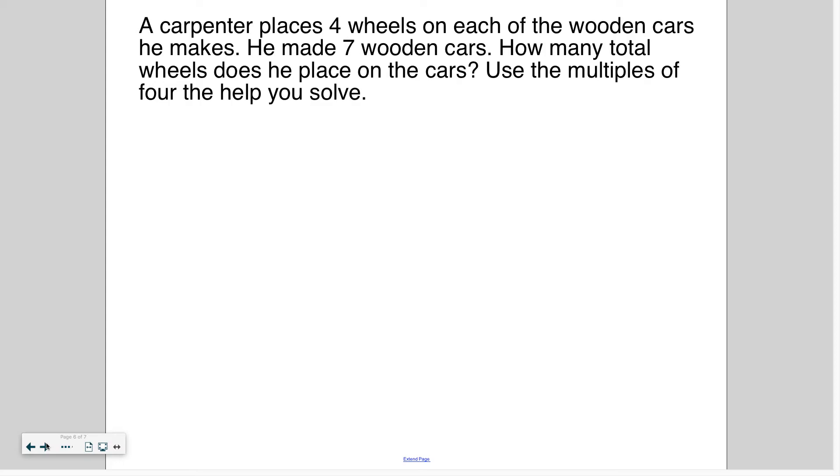So again, you're going to use those facts you just wrote down to help solve this. A carpenter places four wheels on each of the wooden cars he makes. He made seven wooden cars. How many total wheels does he place on the cars? Use the multiples of four to help you solve. So again, you're going to use the multiples of four we just learned to help you figure this out.